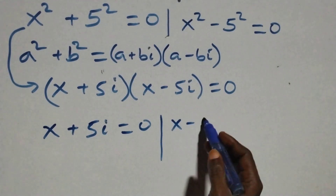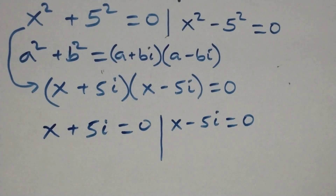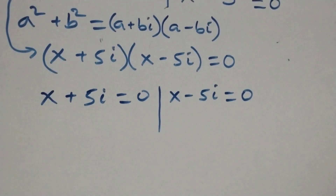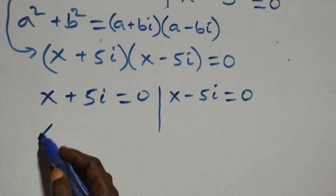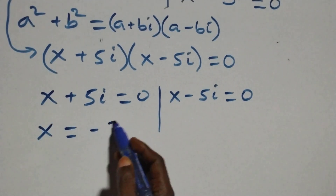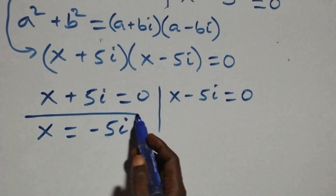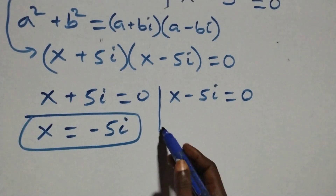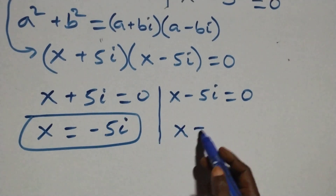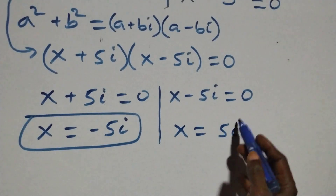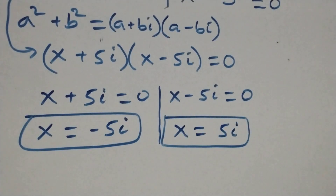From the first case, x squared + 5 squared equals zero, we have x equals zero, or x minus 5i equals zero, giving x equals minus 5i, which is a complex solution. And also we have x equals 5i, which is also a complex solution.